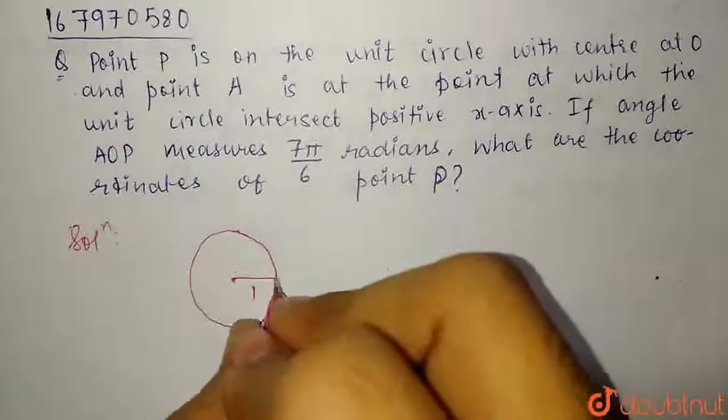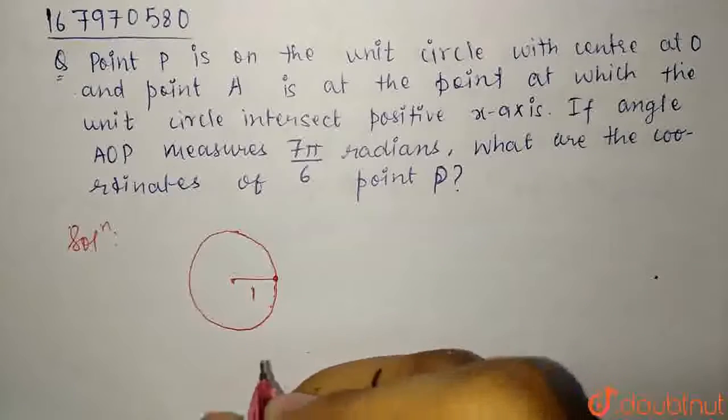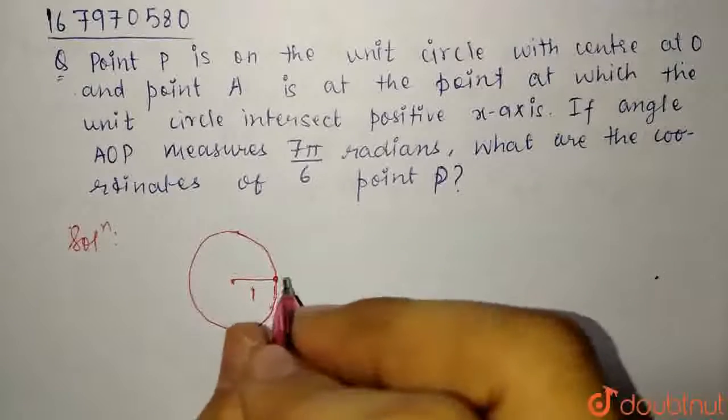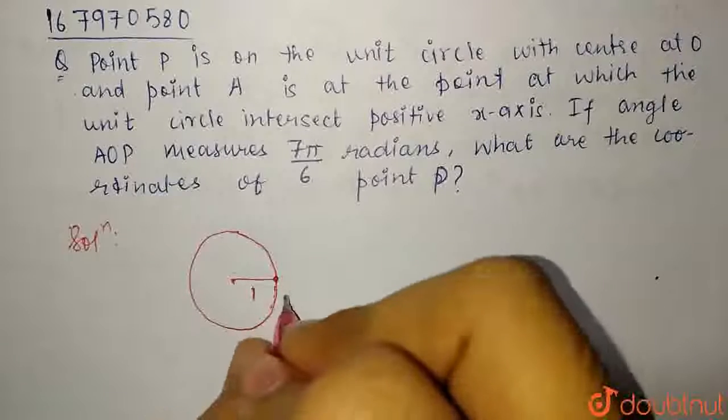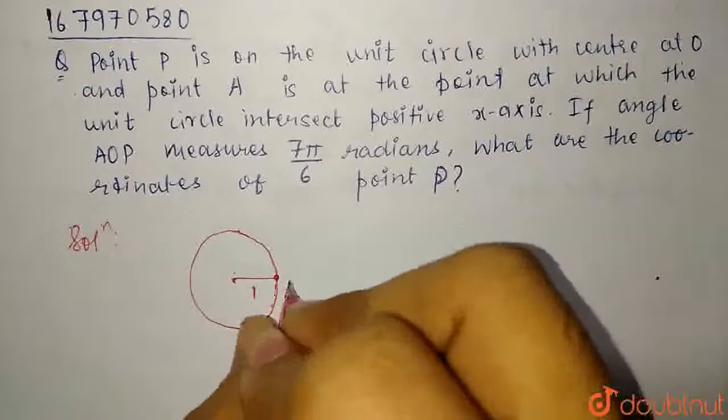This is the radius. And it is given that at x-axis, the point that cuts the circle is given as A.